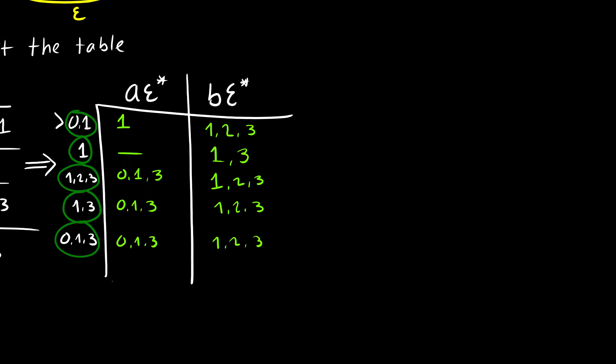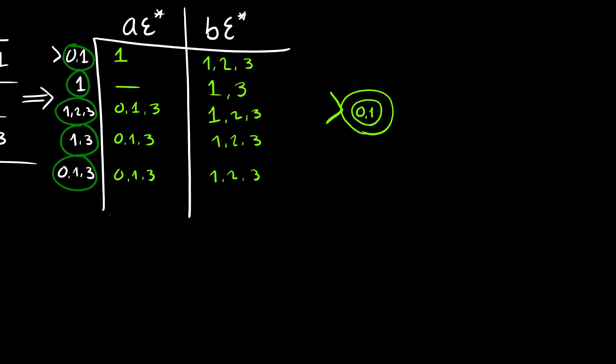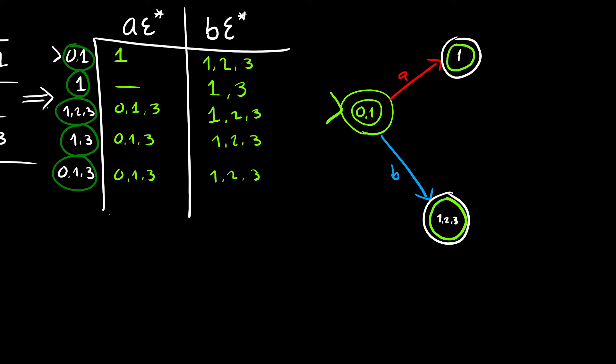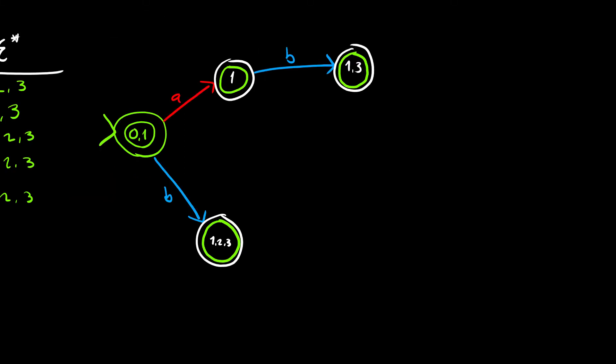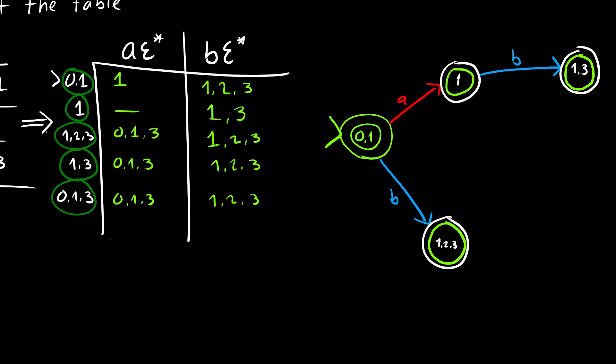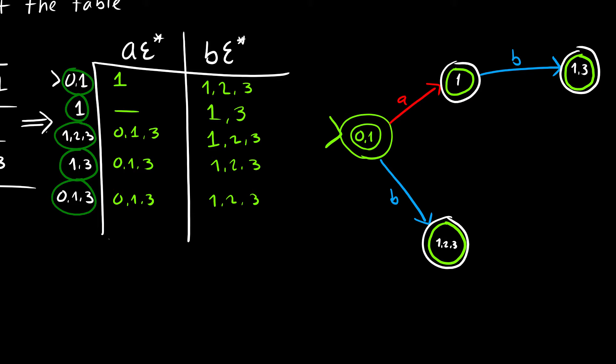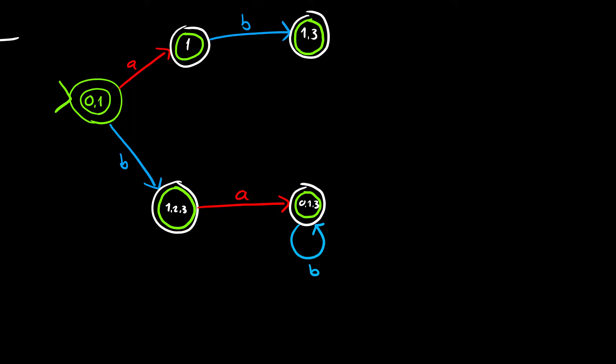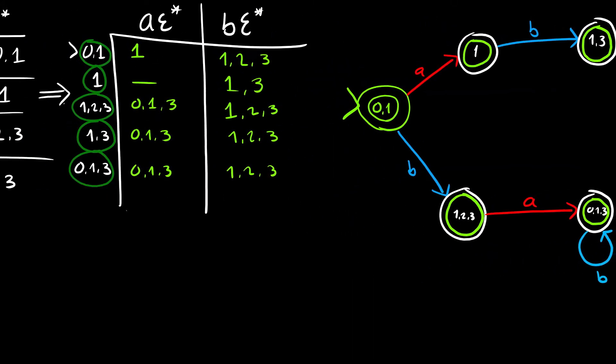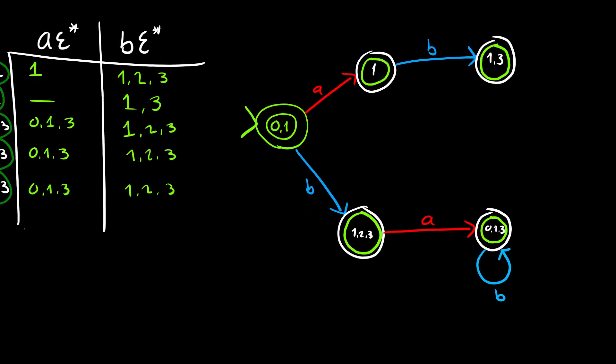Now we use this new table to create our DFA state diagram. Starting with our starting state {0,1}: when we get an A we go to {1}, and when we get a B we go to {1,2,3}. From state {1}, if we get an A we don't go anywhere, and if we get a B we go to state {1,3}. For state {1,2,3}: on A we go to {0,1,3}, and on B we loop back to {1,2,3} itself. For state {1,3}: on A we go to {0,1,3}, and on B we go to {1,2,3}.